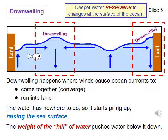Downwelling occurs where winds cause ocean currents to come together — converge — or run into land. The water has nowhere to go, so it starts piling up, raising the sea surface. Eventually, the weight of the hill of water starts pushing the water below it downwards, and thus causes downwelling.